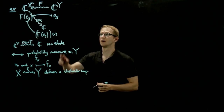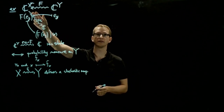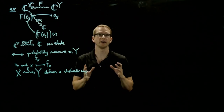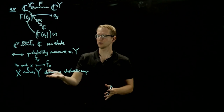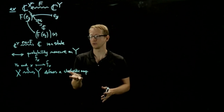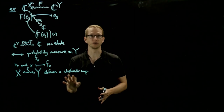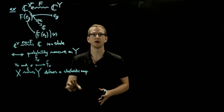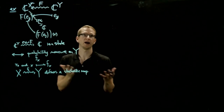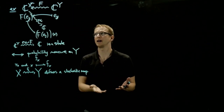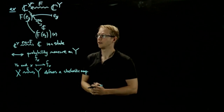In other words, positive unital maps between the C*-algebras given by the function spaces on finite sets X and Y correspond to stochastic maps. This tells us that given a positive unital map, we can construct an associated stochastic map. What about in the other direction? If you give me a stochastic map, how can I construct an associated map between these C*-algebras?